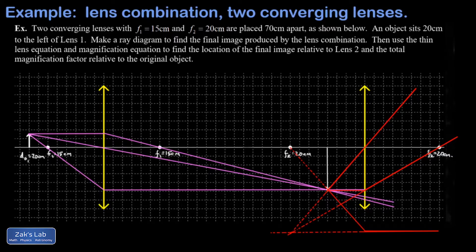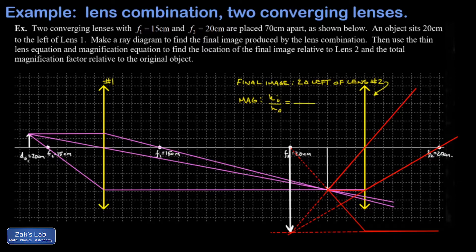We're asked to find the location of the final image relative to lens two. It looks like it landed almost exactly 20 centimeters to the left of lens two — we'll check that quantitatively on the next slide. Lens one is on the left, lens two on the right. For the magnification, my original object had a height of about one and a half grid spaces. The final height looks like about nine and a half spaces, and the image is inverted, so the magnification should have a minus sign, giving us approximately negative 6.3. We'll verify that quantitatively in a moment.